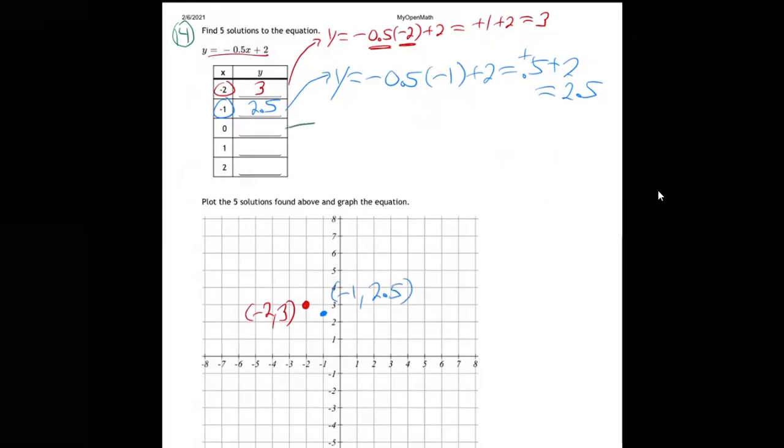And then for the third one here, negative 0.5 times 0, plugging in x=0 plus 2. That's just going to be 0 plus 2, which is 2. That's going to be 0, 2, which is right there.